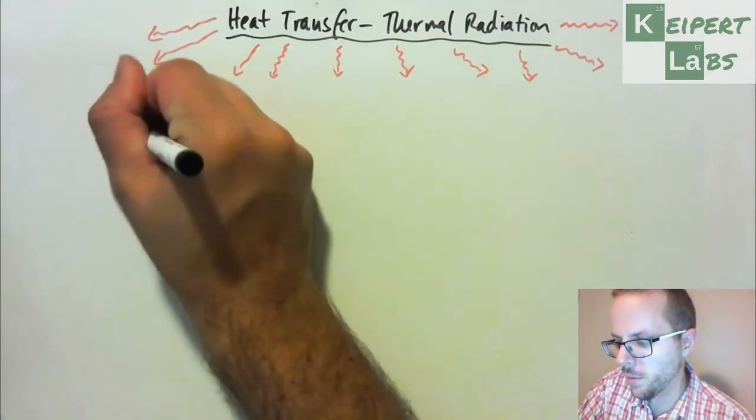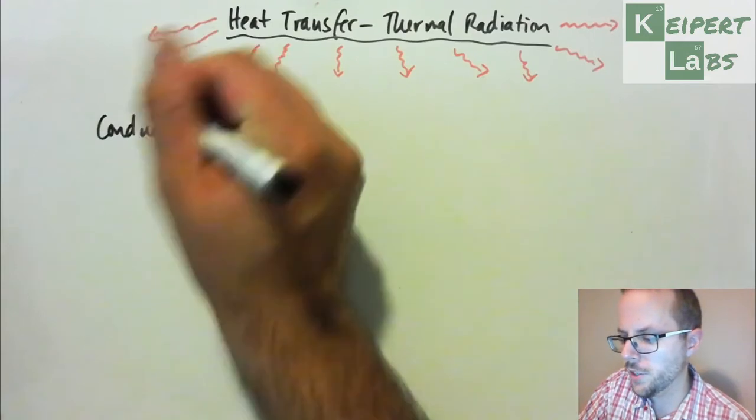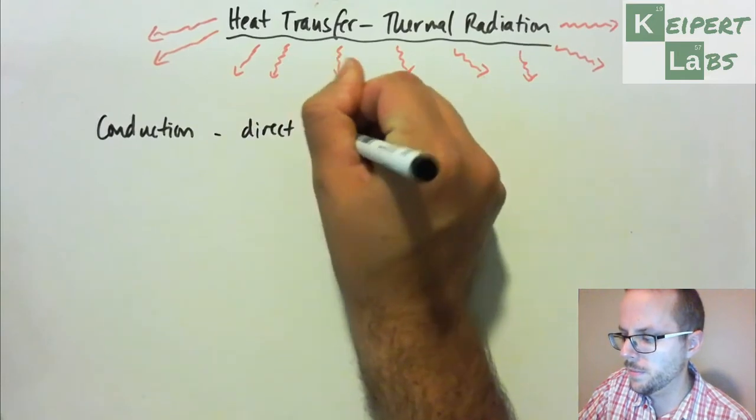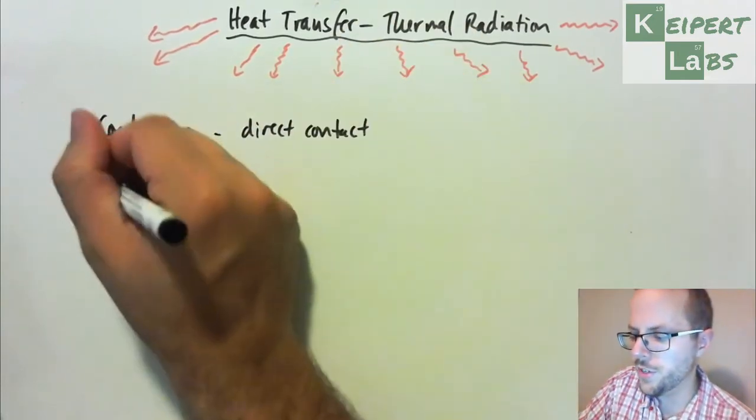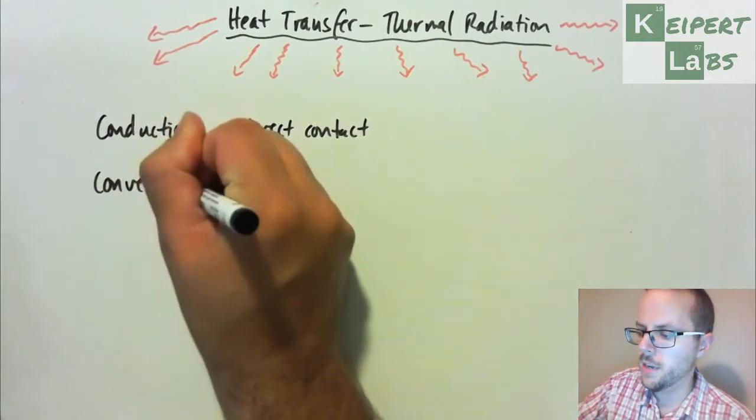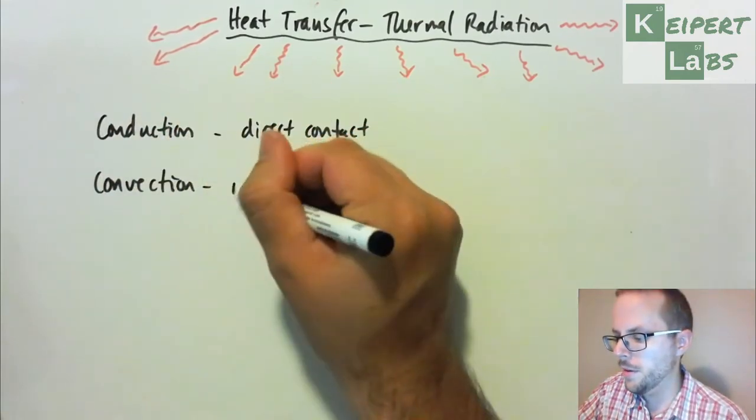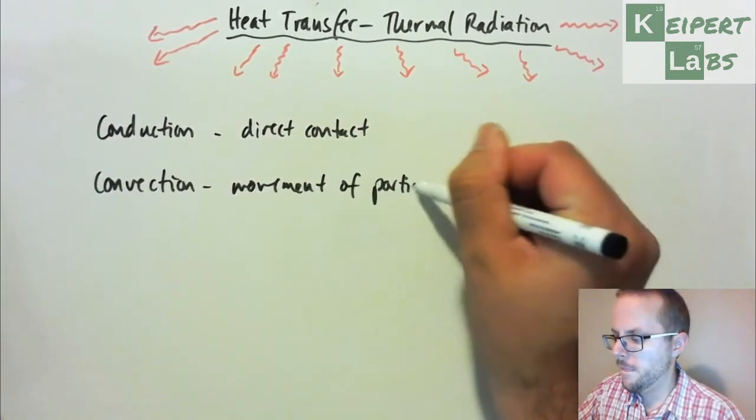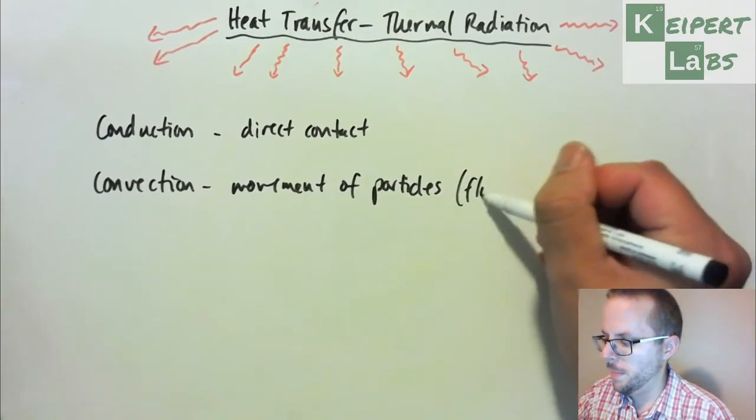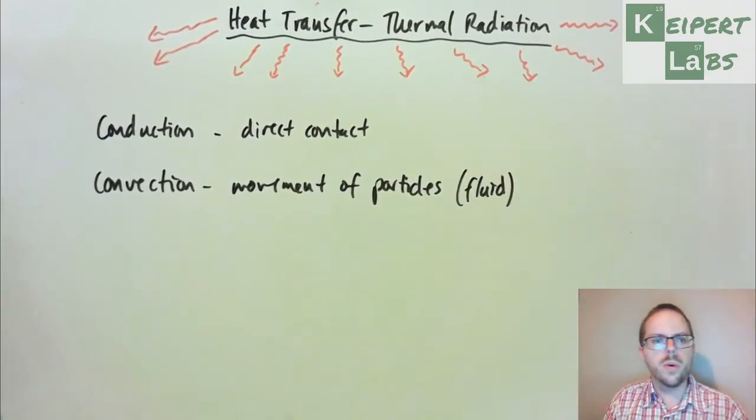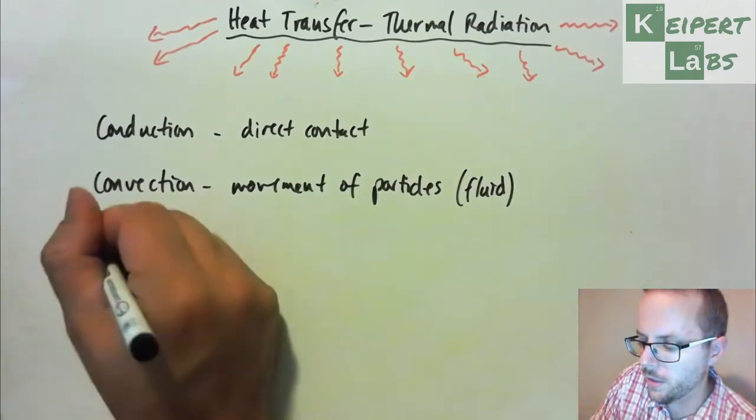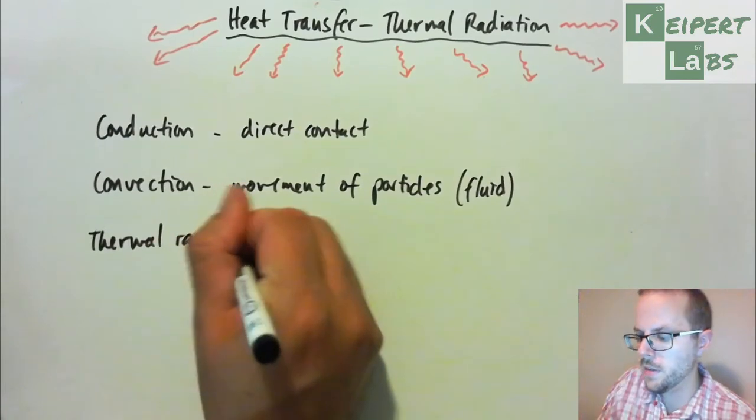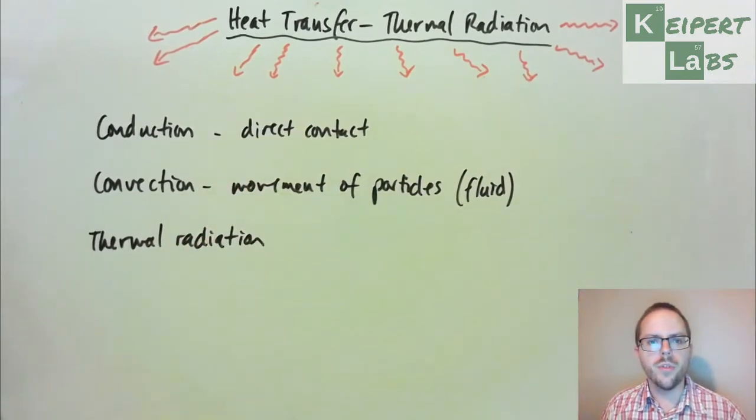So far in this series we've introduced the concepts of conduction, that is heat transfer by direct contact between particles. We've introduced the concept of convection, transfer of thermal energy by movement of particles, typically in a fluid like water, air, or oil. And now we're going to look at the third type of energy transfer by the process we call thermal radiation.